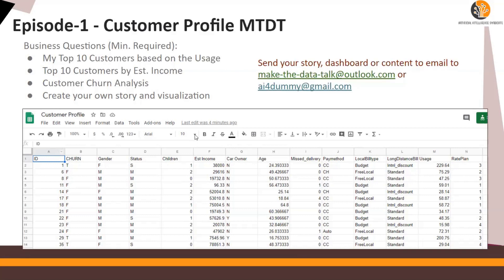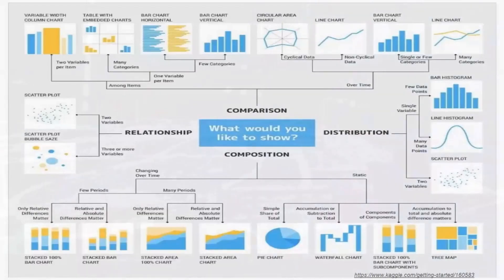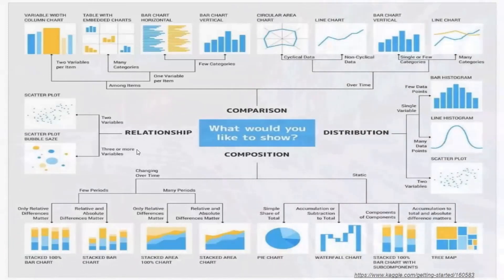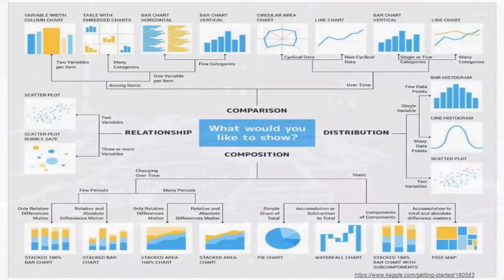Send your story and dashboard to make-the-datatalk@outlook.com or ai4dummy@gmail.com, and use the subject line shown on screen. As a best practice, from kaggle.com/getting-started, this chart shows you a best practice for doing a visualization — what would you like to show, two variables per item, main categories, few categories — and points you to different chart types like relationships, two-variable plots, three or more variable plots, and so on. This will give you a good understanding of which visualization to use. It's not mandatory, but it will give you good direction.